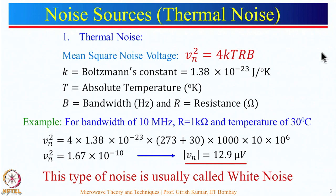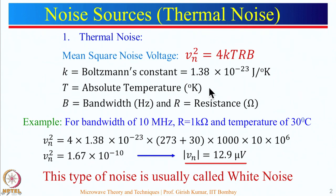The first noise source is thermal noise. Thermal noise is basically due to the resistors in the circuit. When a current flows through a resistor, there will be power dissipation given by I²R. This power dissipation leads to heat — that is the thermal effect, also known as thermal noise. The mean square noise voltage Vn² is given by 4kTRB, where k is Boltzmann's constant (1.38×10⁻²³ joules per degree K), T is absolute temperature in Kelvin (equal to 273 plus temperature in Celsius), B is bandwidth, and R is the resistance value.